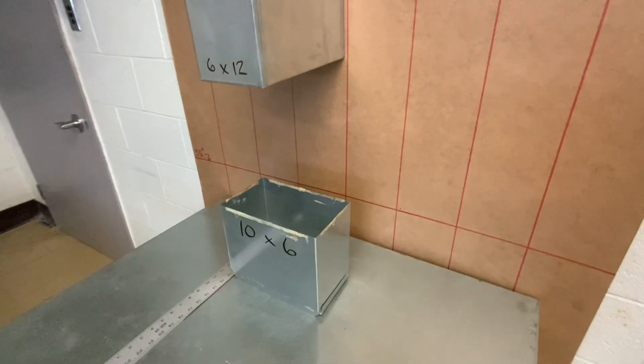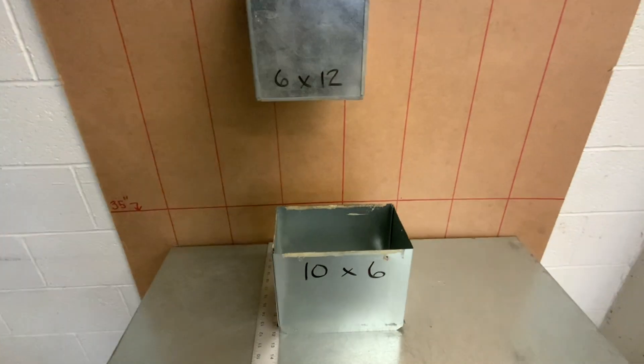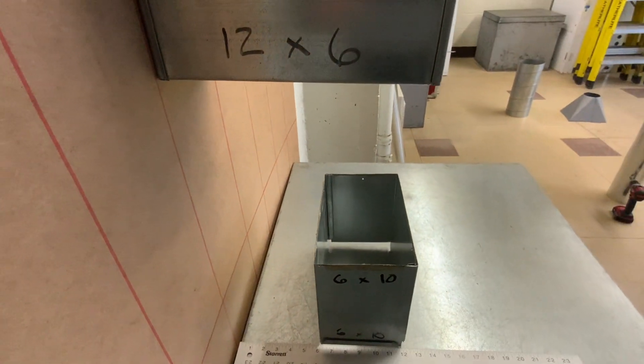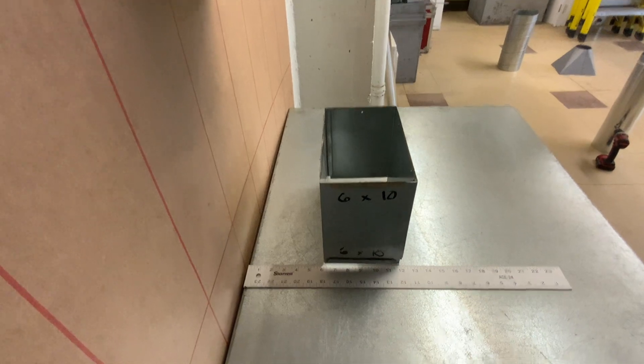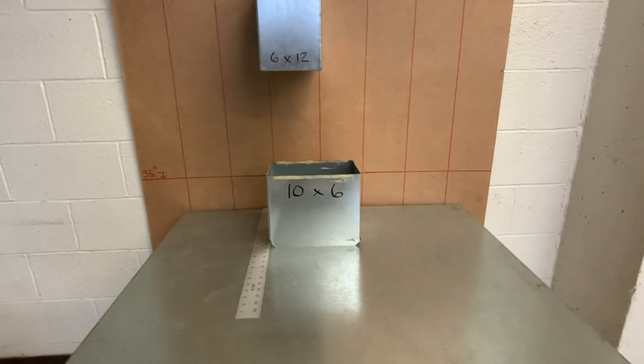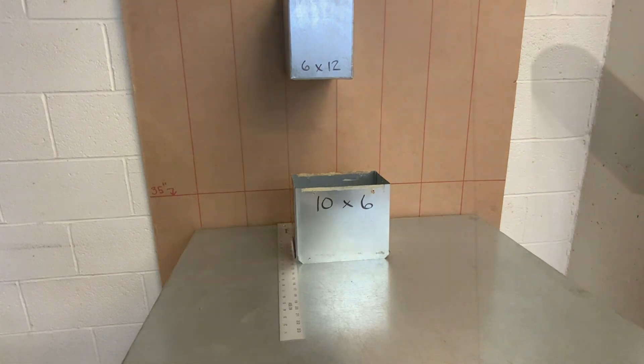Second scenario: we have a 10 by 6 duct that is 6 inches away from the wall, and then we've got a 12 by 6, or 6 by 12. I'm going to draw this transition from this view.